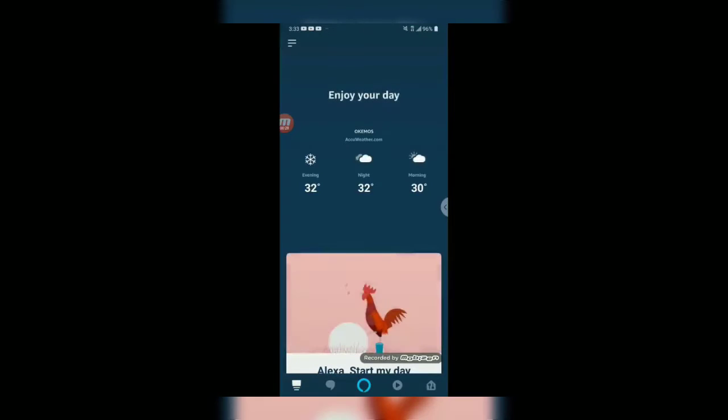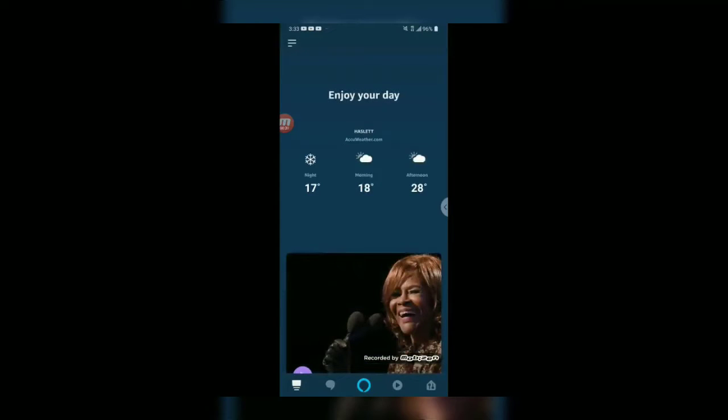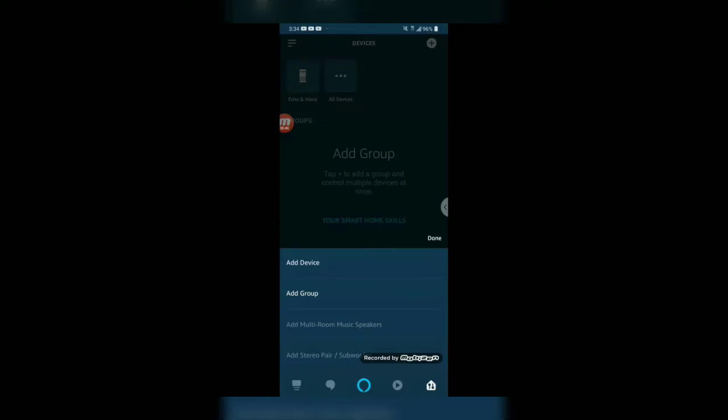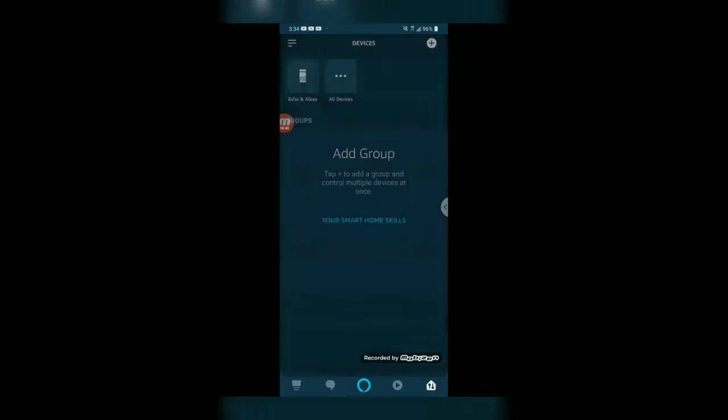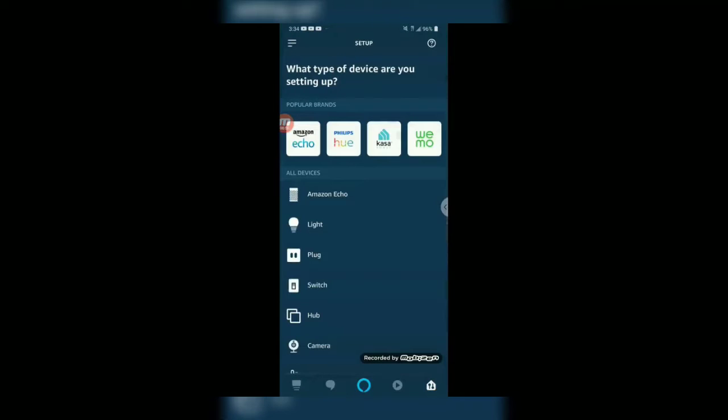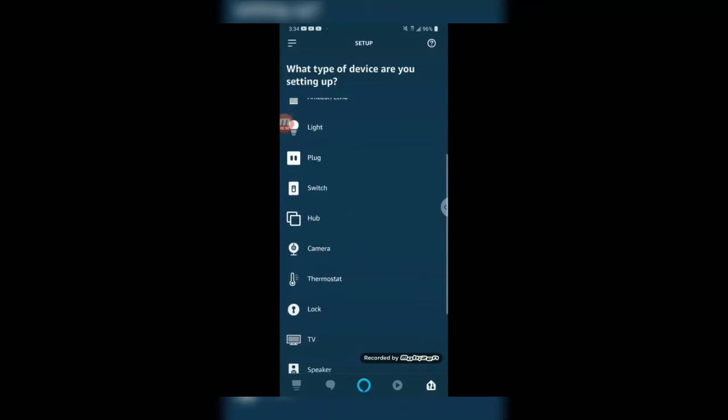First thing you want to do is down here in the bottom right corner, click this devices button. This screen pops up and in the top right corner, the plus sign is going to allow you to add devices. Let's click that, and then we're going to click add device. Now this asks you what type of device are you setting up. What we want to do is scroll through the list until we find microwave and click microwave. What brand is your microwave? You want to click the Amazon basics brand. That's what we have.